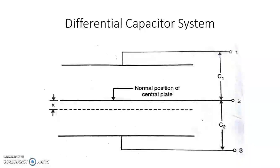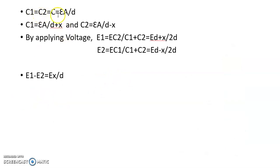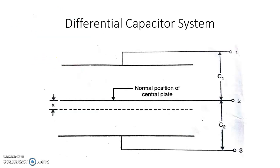Now let us see the differential capacitor system. In this system, two parallel plate capacitors are formed by one common central plate. The normal position of the central plate is represented by a solid line, and therefore the capacitances C1 and C2 are identical, since the distance from each outer plate to the central plate is equal. Both capacitances equal C = epsilon A divided by d, where A and d are the same for both capacitors.